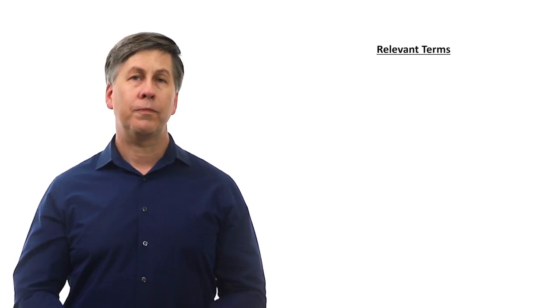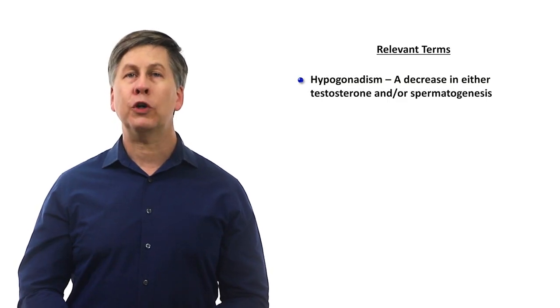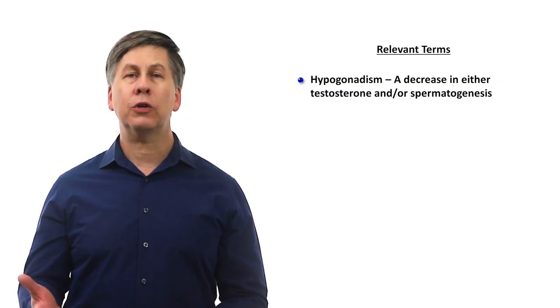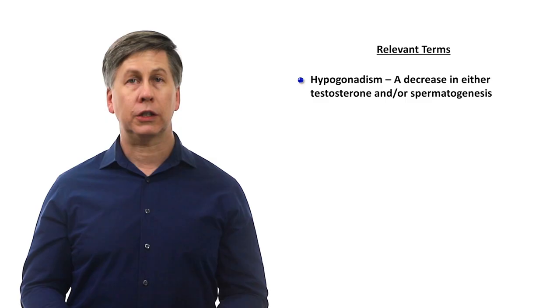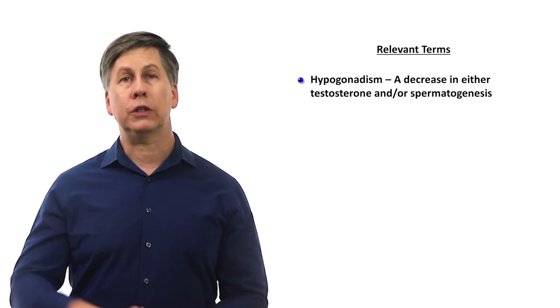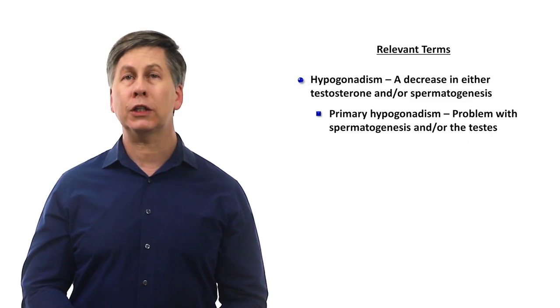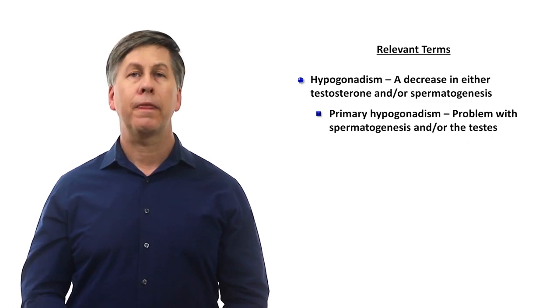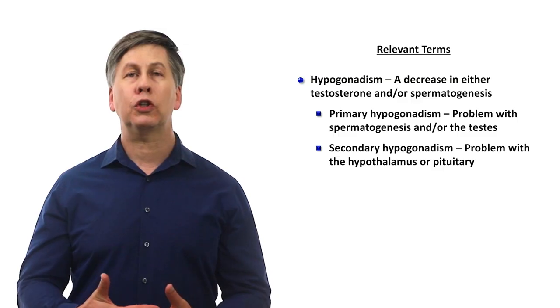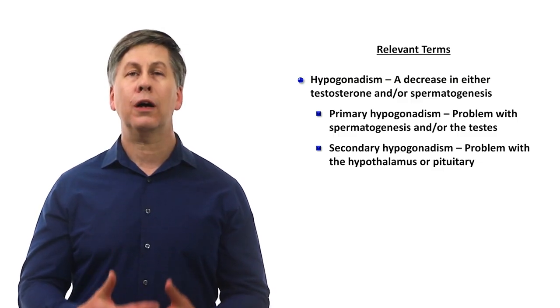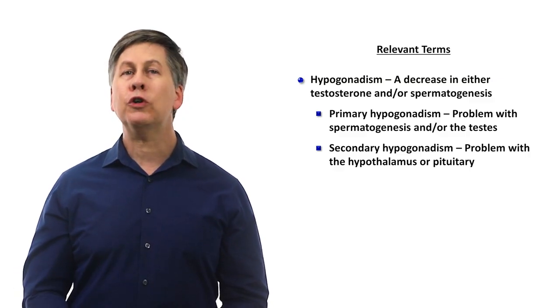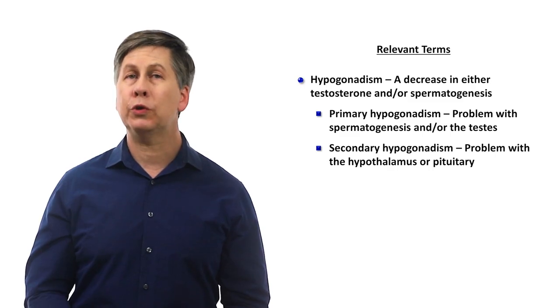Before I talk about the individual etiologies of male infertility, there are a few additional terms to review. Hypogonadism refers to a decrease in either testosterone and or spermatogenesis. There are two main categories. Primary hypogonadism refers to problems with spermatogenesis and or the testes. Secondary hypogonadism, also referred to as hypogonadotropic hypogonadism, refers to problems with the hypothalamus or pituitary.